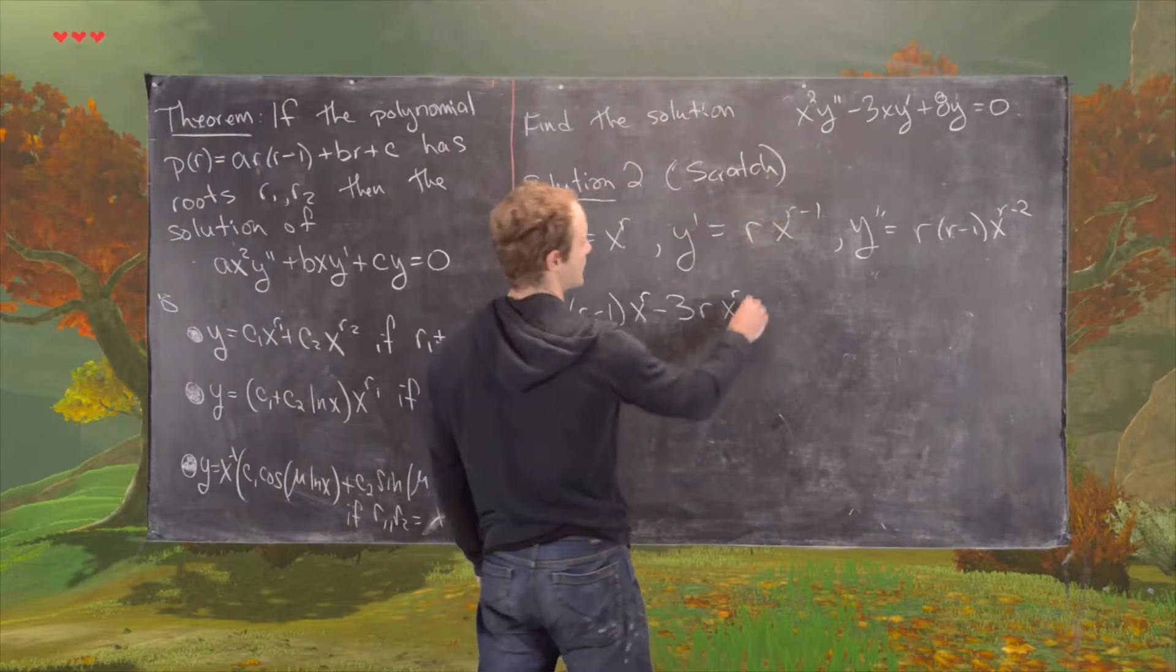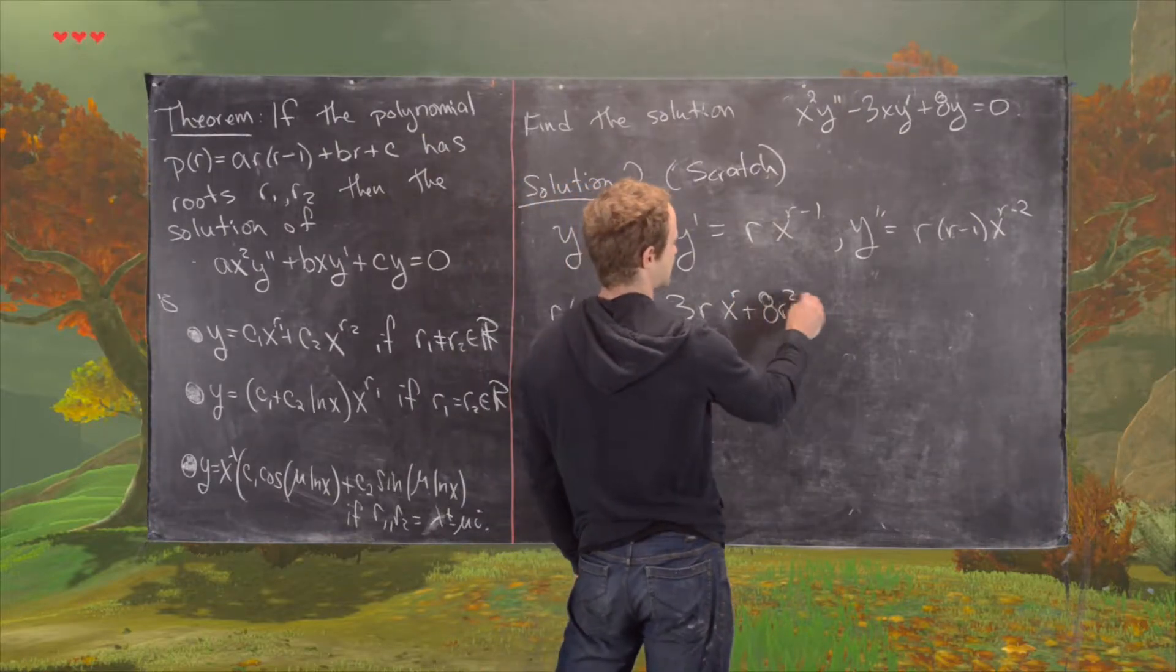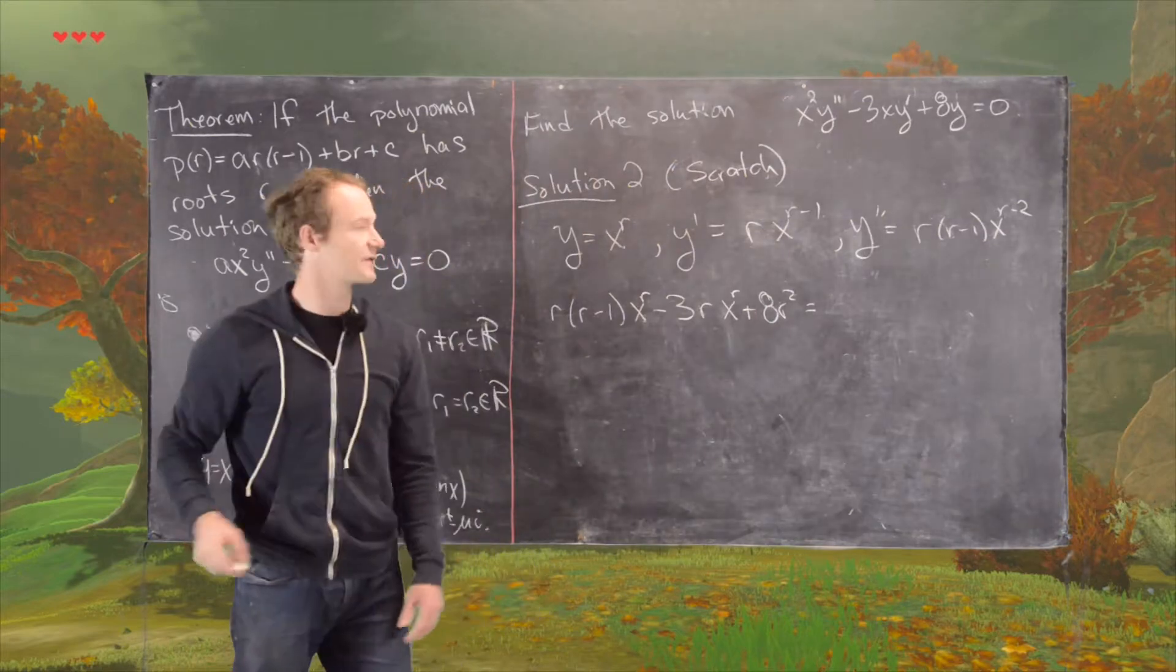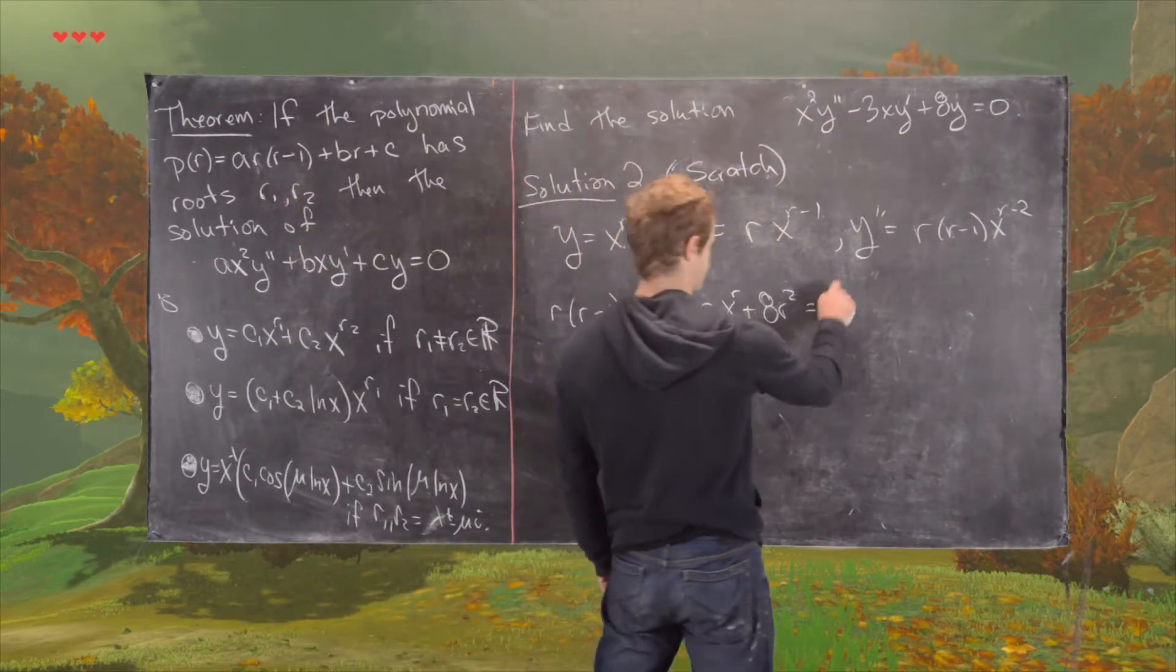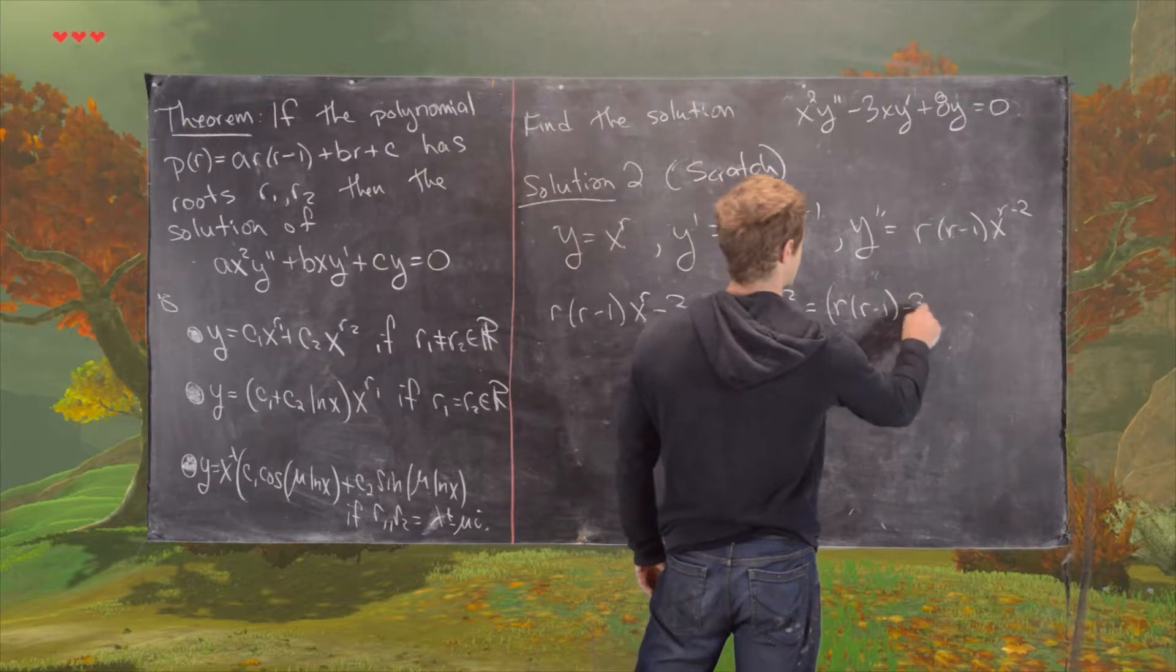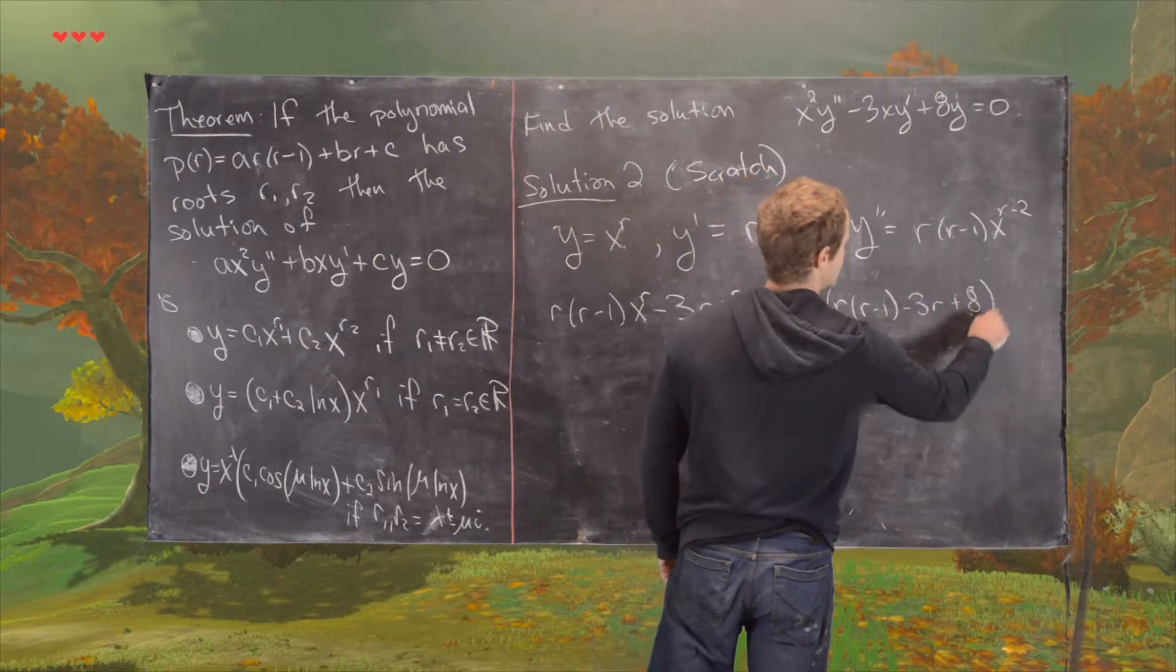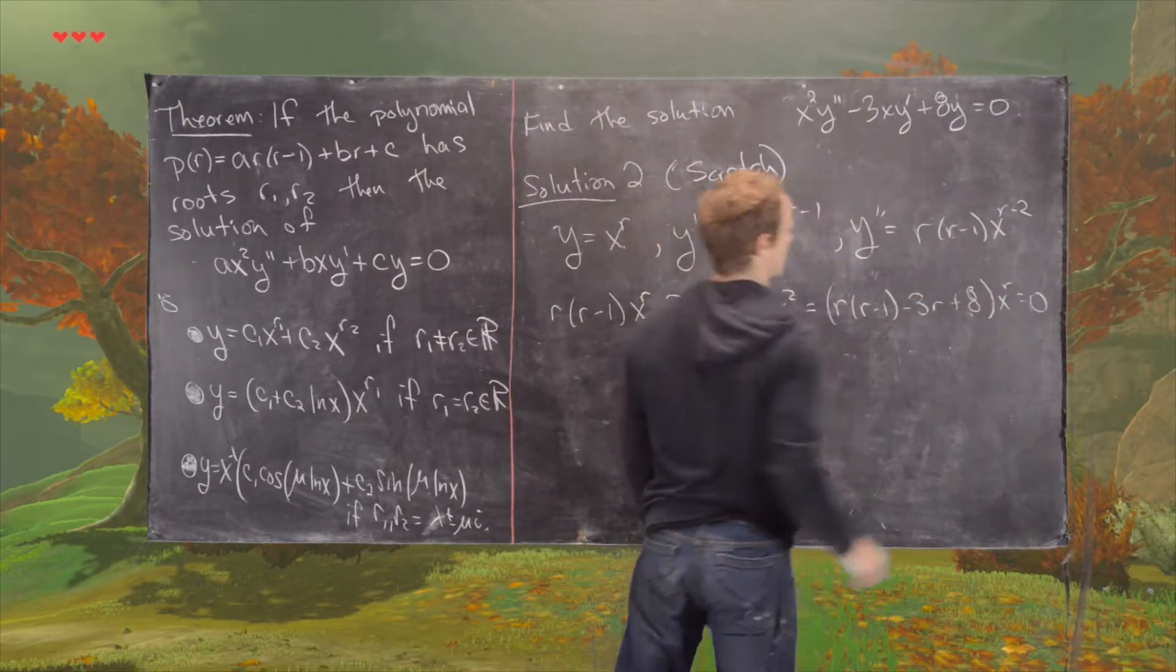and then plus 8 x to the r, which tells us that we have r times r minus 1 minus 3r plus 8 x to the r equals 0.